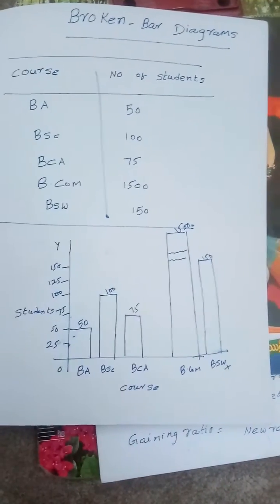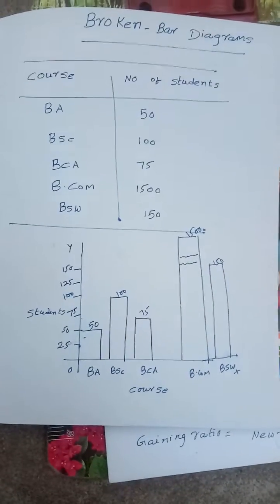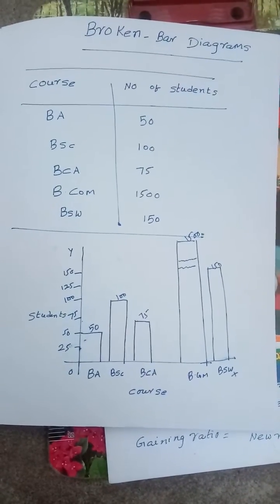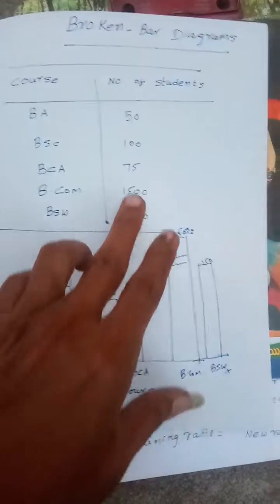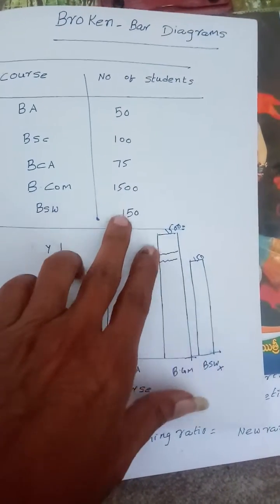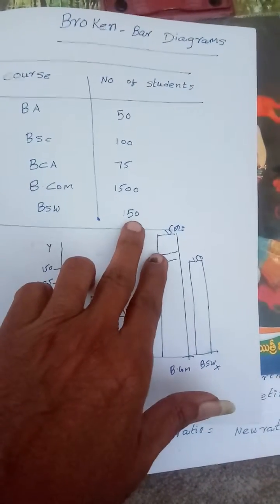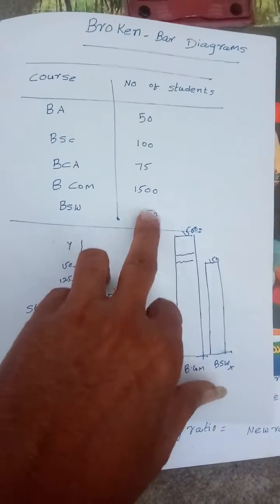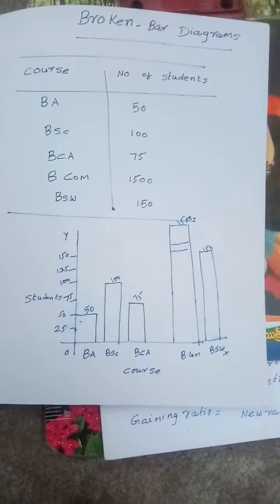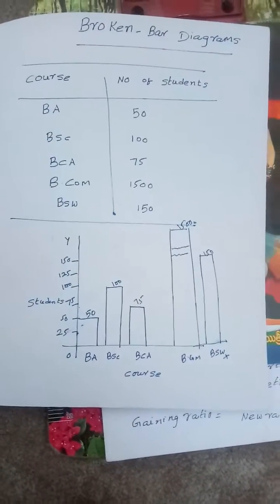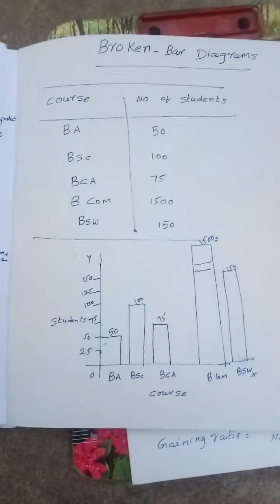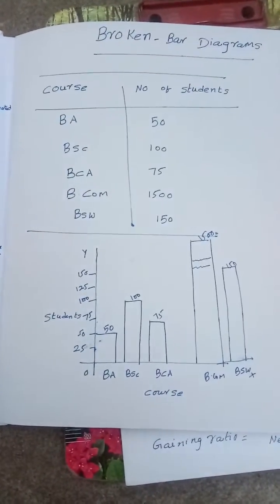BA compared to BCA, the strength is nearby 50, 100, 75, 150 likewise. But this is broken, it went up, maximum is 150 here among all these, but this is 1500. In such a case where there is a variation between the smallest and the largest, we have to take broken bar diagram.